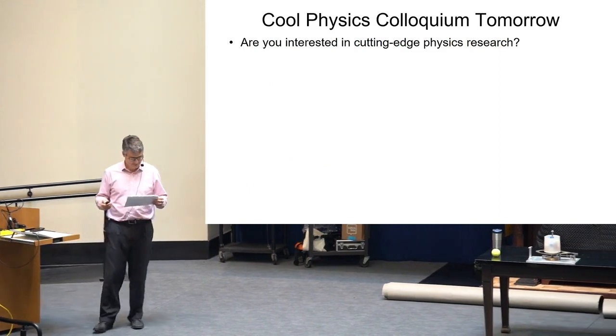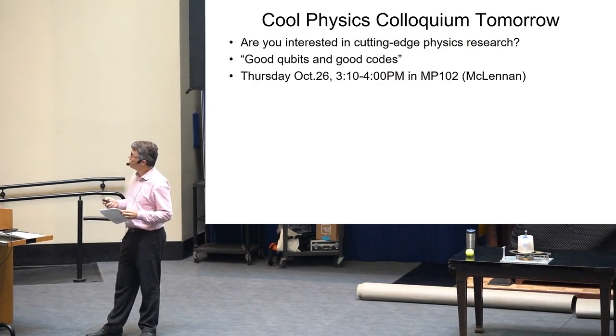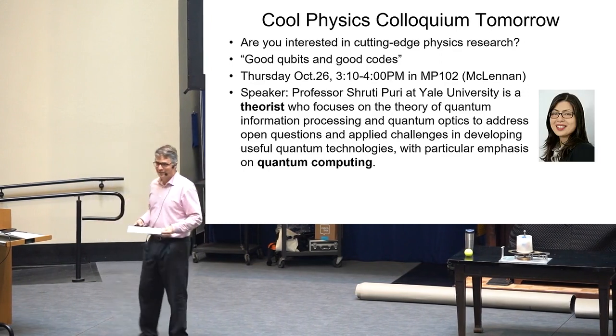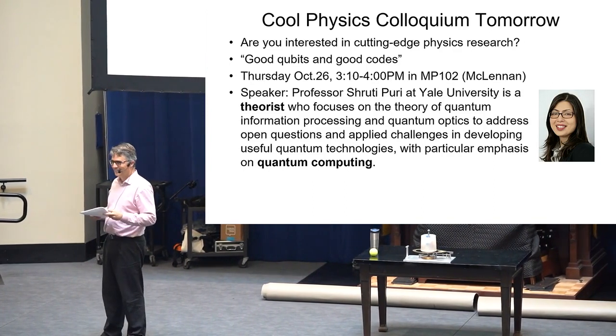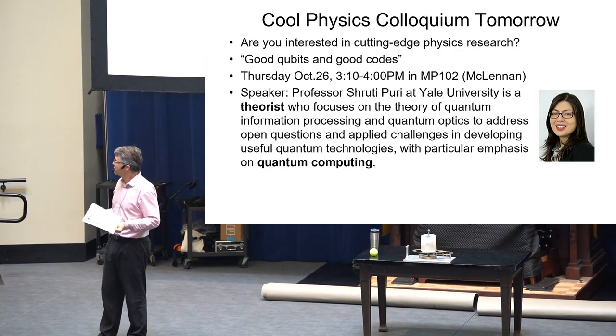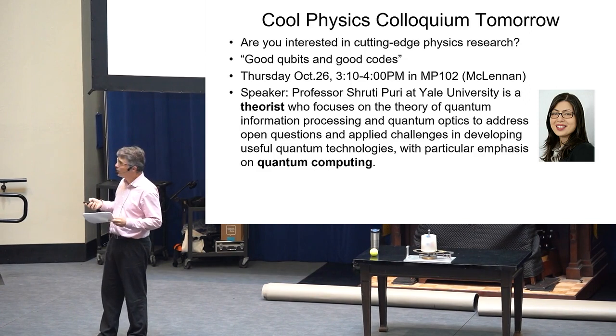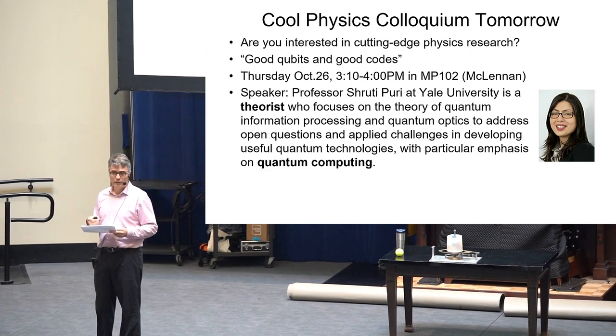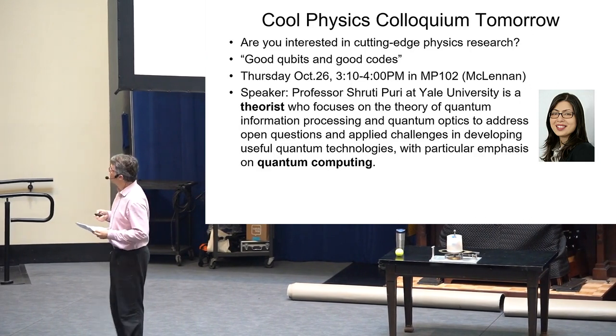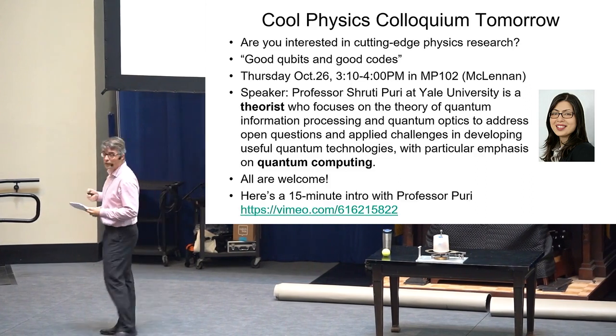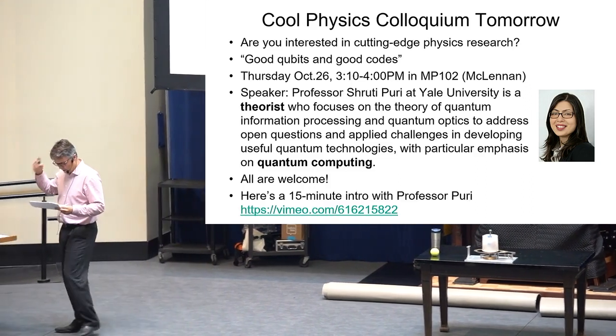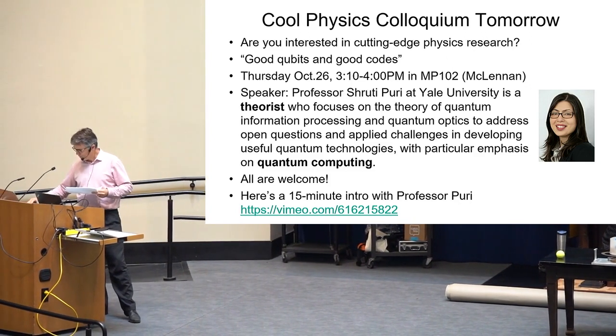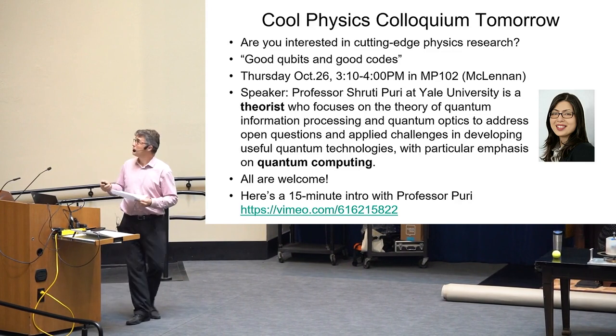What else is going on here? This is just a little ad for tomorrow's colloquium called Good Qubits and Good Codes. It's a research talk, so it will be high level. But it is cutting-edge physics research. This is Professor Shruti Puri at Yale University, one of the smartest people on the planet, already been winning awards for her research, and coming to talk, so it's an exciting talk. All are welcome. I'm going to include a little link there.